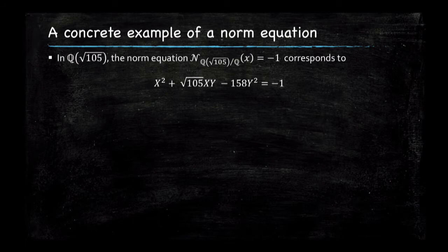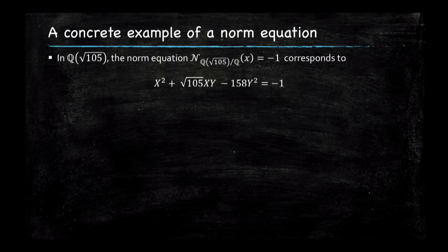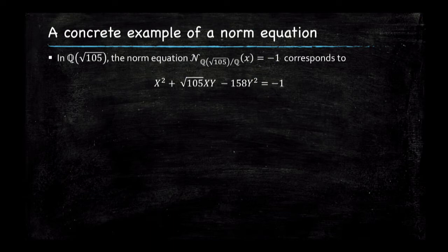A norm equation is an equation of the form: the norm of an element in a number field equals something. A particular example taken from Denis Simon's PhD thesis shows that one way to reformulate a norm equation gives a simple equivalent formulation — and then you understand this is a very fundamental problem in number theory, known as Hilbert's tenth problem. Deciding whether an equation of this form has integral solutions is a fundamental problem which, in fact, does not have any general solution.